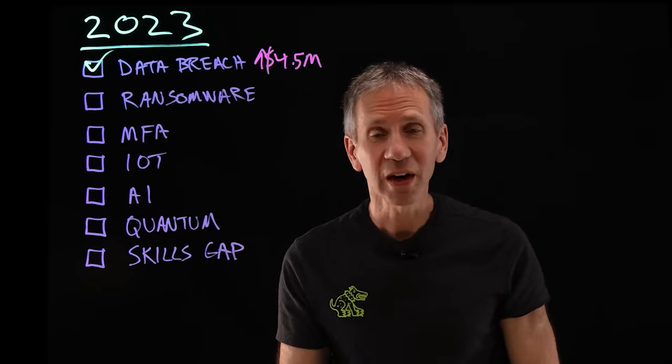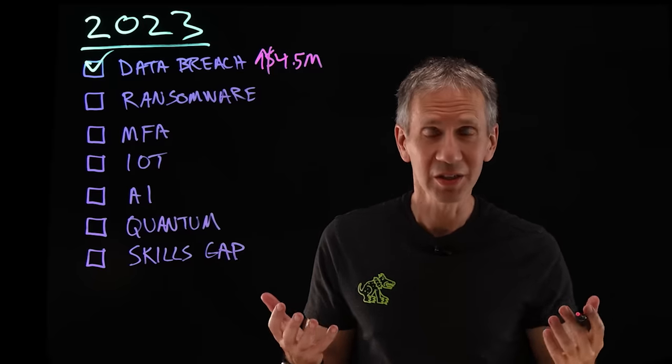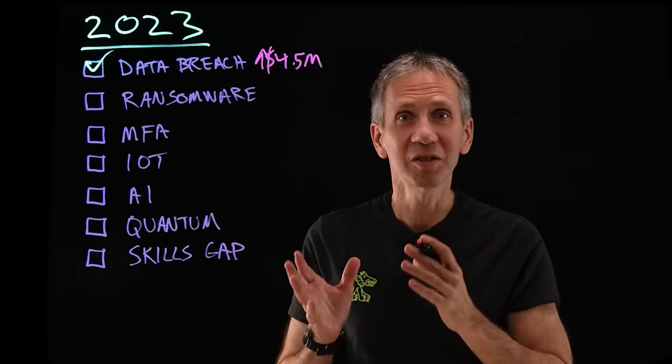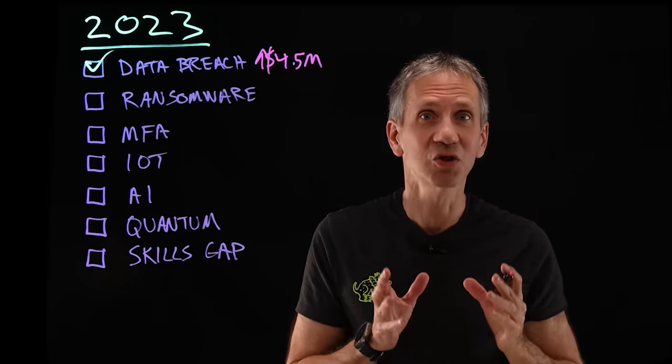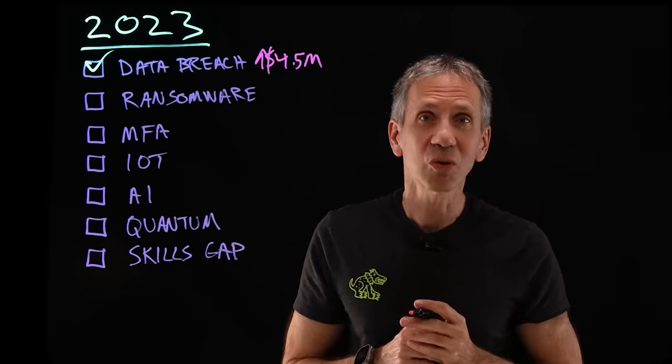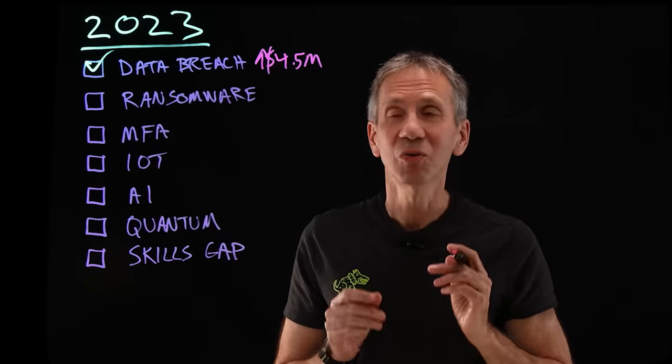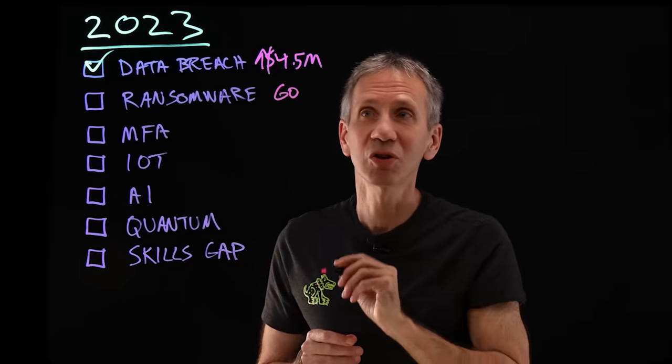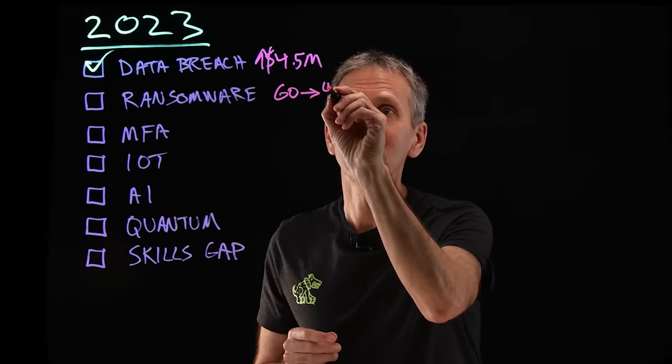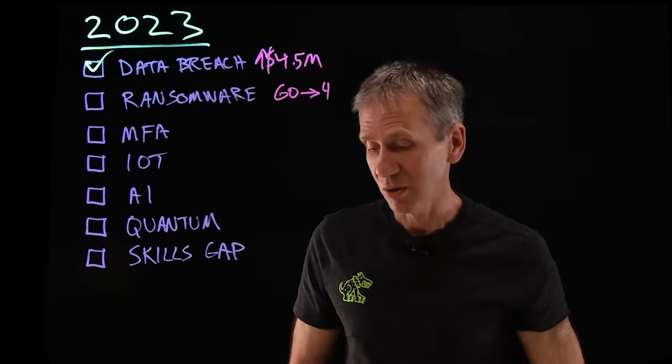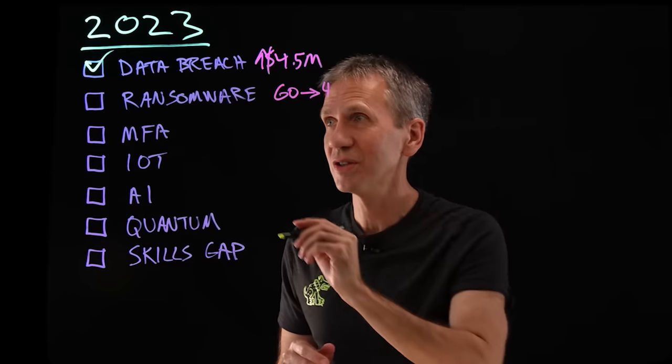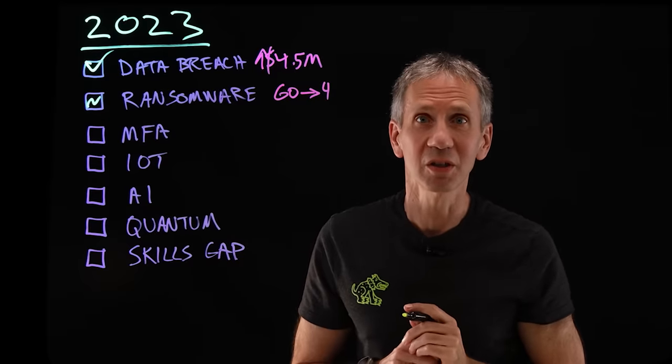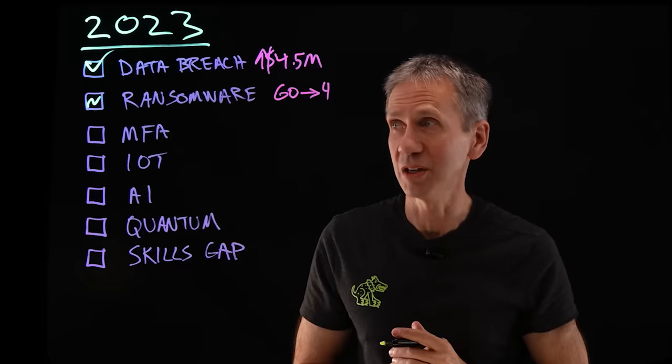Ransomware - we've continued to see ransomware persist. The overall numbers are a little bit down, but the amount of time it takes to run one of these attacks has changed dramatically. This according to the X-Force Threat Intelligence Index, which says that back in 2019, we were looking at 60 days on average to deploy one of these. Now we're down to about four days. So this is kind of a mixed bag. It's sort of true, sort of not true, but ransomware is going to continue to be a threat, and it's a faster threat than it used to be.